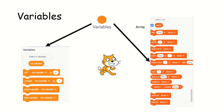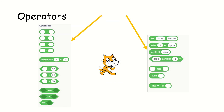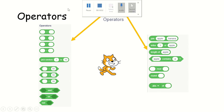We are going to see a simple example covering variables, sensing, and finally operators. What are operators? A plus B — what is the plus called? It is an addition operator. Minus is subtraction operator, multiplication operator, division operator. All these are the operators, along with greater than, less than, equal to, and, or. Modulo operation, round off, abs — all these are available and we can use them in our coding.